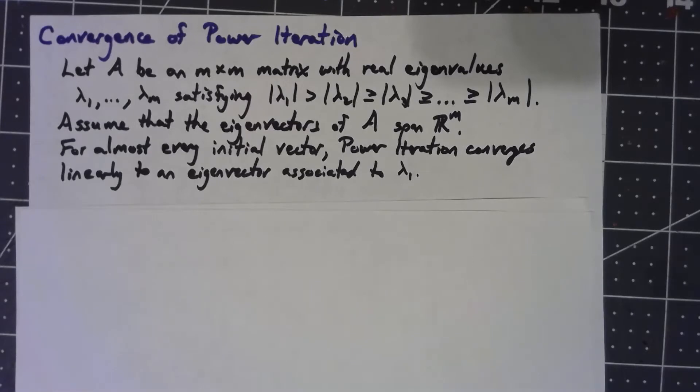However, when you've got repeated eigenvalues there are cases where you cannot create a basis of eigenvectors. The other thing is that for almost every initial vector, it's going to converge linearly to an eigenvector associated with that dominant eigenvalue.